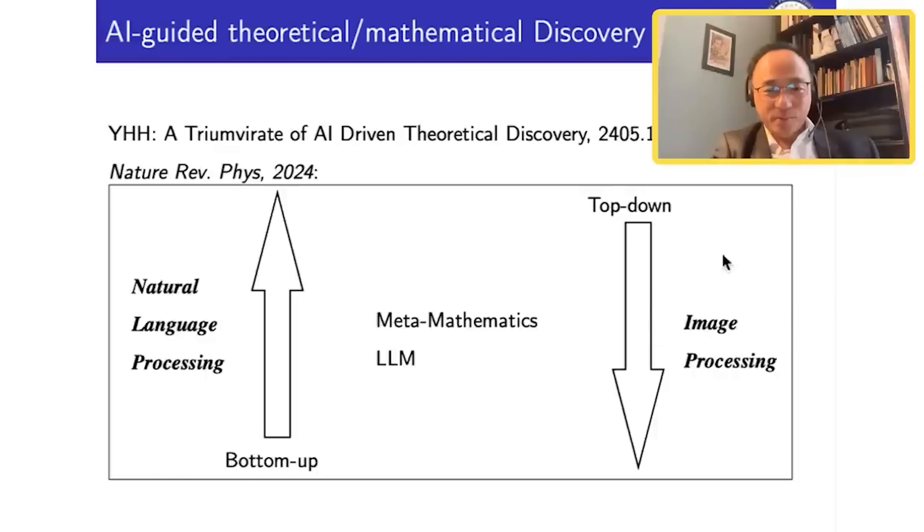So how is Conway visualizing the monster group? Maybe in terms of the leech lattice. He had this picture of the leech lattice. To him, the monster group is some extension of the automorphism of the leech lattice, which is how he and Griess and others originally came up with the monster — not by very hardcore classification of simple groups. He really intuited it. He got this group out by doing norm-two lattices, and he was able to see the symmetry, the group of symmetries of this lattice. And that's a remarkable thing.